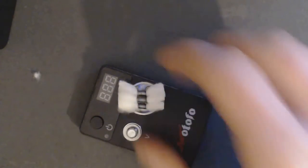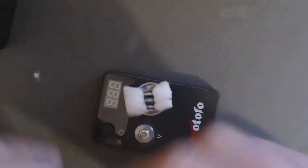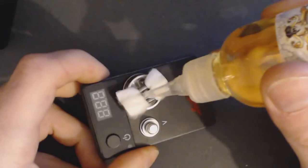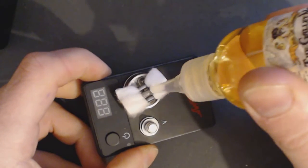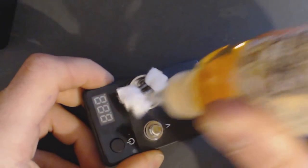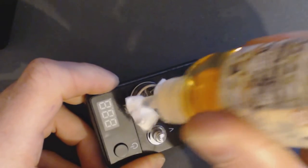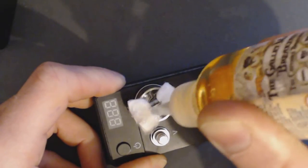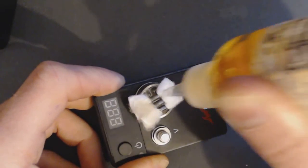Being bottom fed you can obviously just screw it straight on and start priming, but it's always best just to give them a helping hand and get a little bit on the top side of them. It also helps that the cotton sort of sits down into the juice well without bouncing back up again.